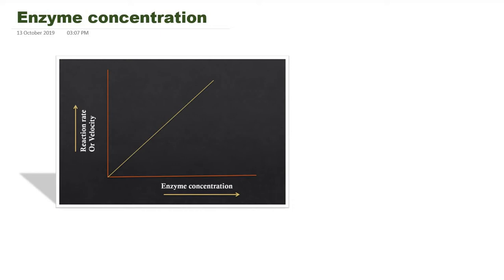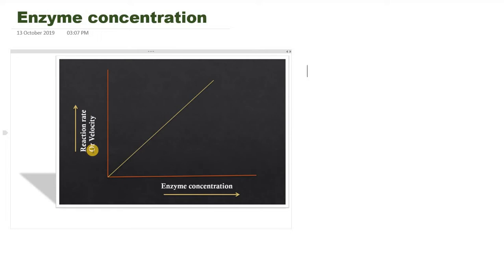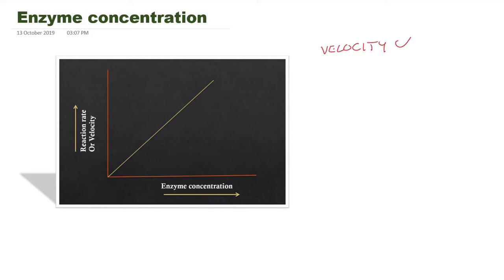Here we will see the effect of varying concentration of enzymes on the rate of enzyme catalyzed reaction. On the x-axis we have enzyme concentration, and the y-axis is velocity or rate of enzyme catalyzed reaction. As enzyme concentration increases, there is a linear increase in the rate of reaction. So we can say velocity is directly proportional to the concentration of enzyme.